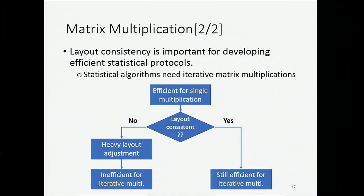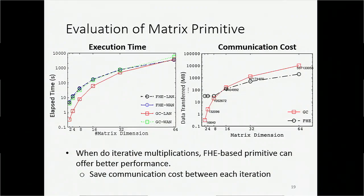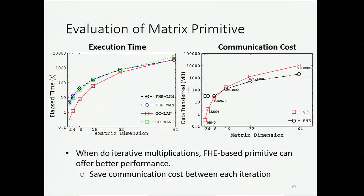We are going to show some performance results of our matrix primitive, compared with a garbled circuit counterpart. We implemented the garbled circuit using ObliVM and used two different kinds of network. The left-hand side picture shows how many seconds are needed to do one matrix multiplication on two equal-sized matrices, and the right-hand side picture shows how many megabytes were transferred during computation. The horizontal axis indicates different matrix sizes. We can see that the performance of our primitive is very close to its garbled circuit counterpart. And since this is just a single matrix multiplication, we think our method can perform better for iterative multiplication because we do not need communication during each iteration.